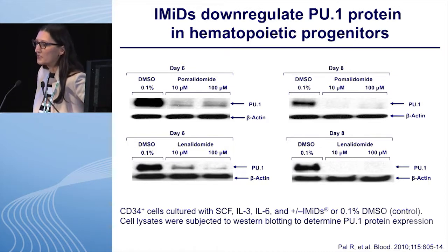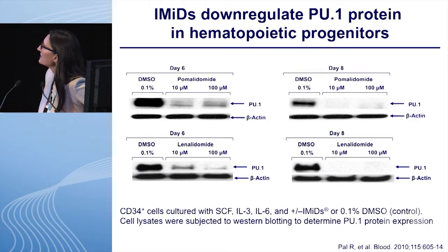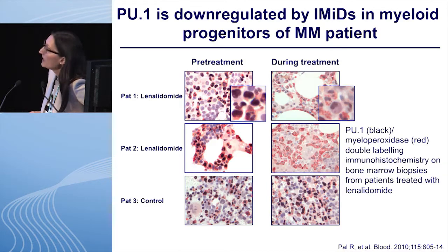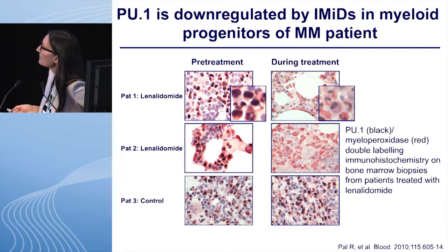To begin proving our hypothesis, we went back to our liquid cultures. We used CD34 cells cultured with stem cell factor, IL-3, IL-6, and our IMIDs — pomalidomide in the upper panel and lenalidomide in the lower panel. After six and eight days, lenalidomide and pomalidomide completely downregulated PU.1 protein expression. We went back to patient samples — pre-treatment bone marrow and during cycle four of REV-DEX treatment — and compared them with patients who only received dexamethasone. Double labeling for myeloperoxidase-positive myeloid cells and PU.1 confirmed a strong downregulation of PU.1 during lenalidomide treatment.